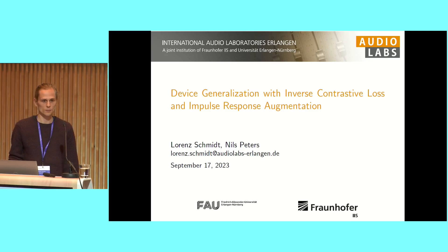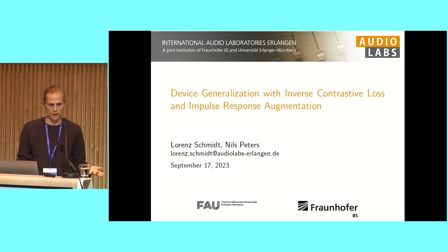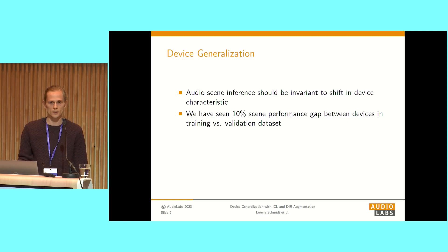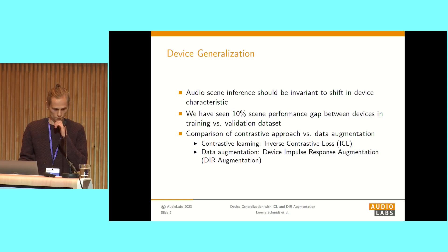Hi everyone. I'm Loren Schmidt, a PhD student at Audio Labs from FAU in Erlangen. We participated this year in DCASE Challenge Task 1 and used inverse contrastive loss (ICL) for contrastive learning to improve device generalization, and compared it to impulse response augmentation. A common problem in Task 1 acoustic scene classification is that you see good performance for device A but not for the other devices, and we want to improve this.